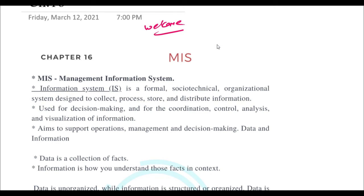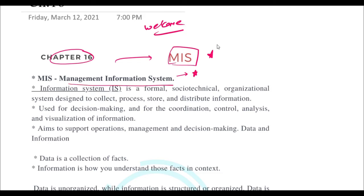Hello guys, welcome to today's video. Today we'll be discussing Chapter 16 of the book Aviation and Business Management. The topic of discussion is MIS — Management Information System. What exactly is a management information system?